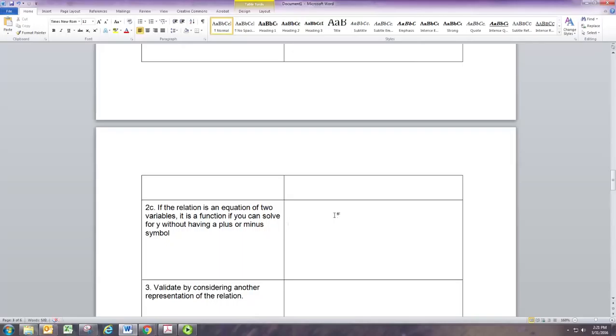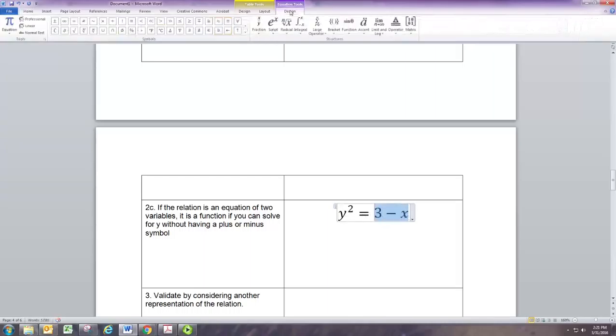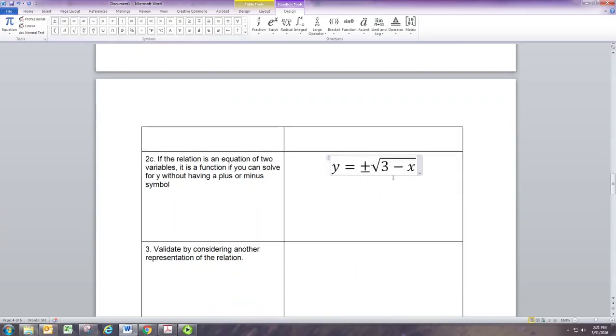Sometimes you can't solve for y. And sometimes when you solve for y, what you get is still not a function. We can subtract x from both sides. And then we can take the square root of both sides. The square root and the square cancel, but when you take the square root of both sides of an equation, you need to add in a plus or minus. And that's actually where you get into trouble.